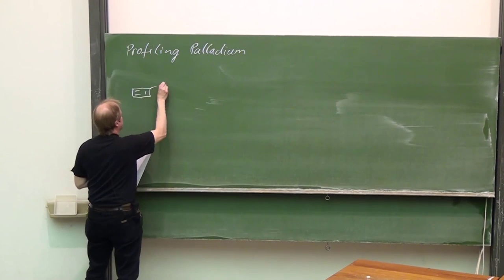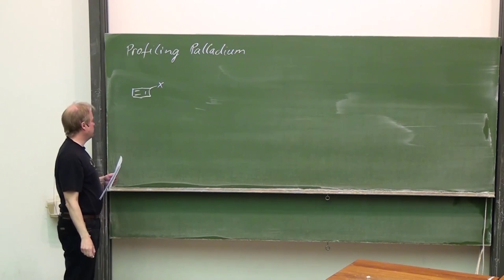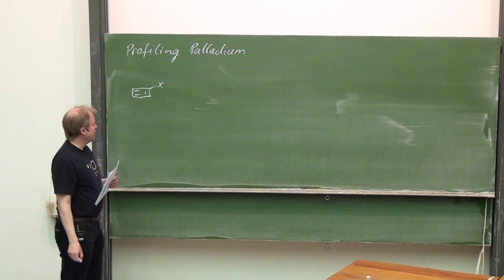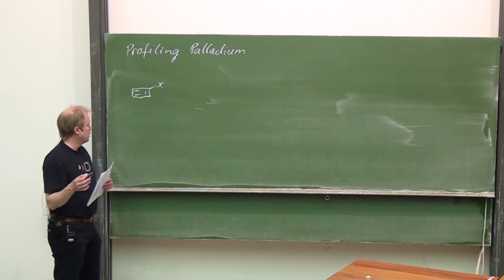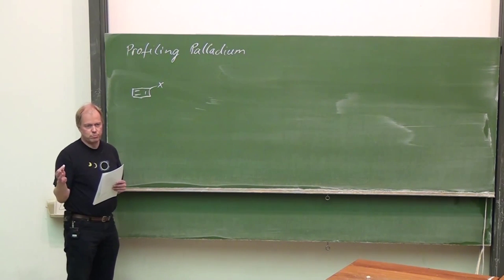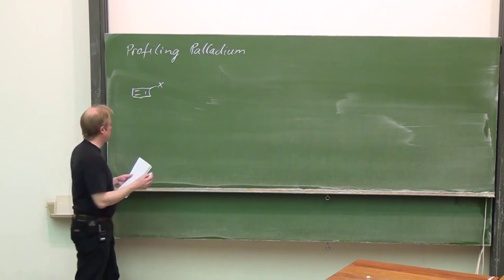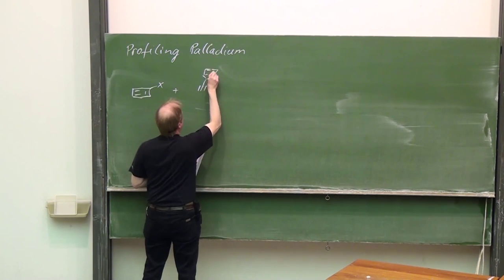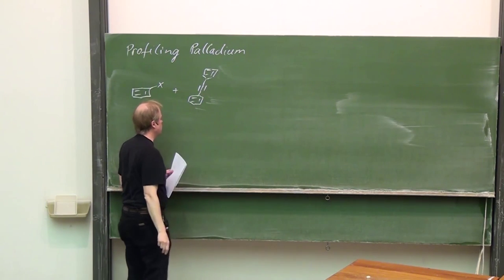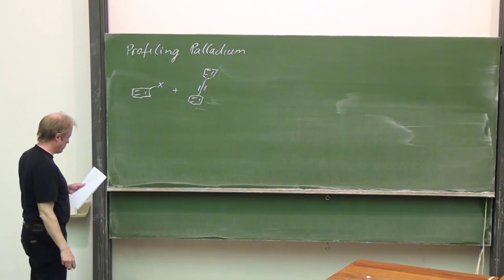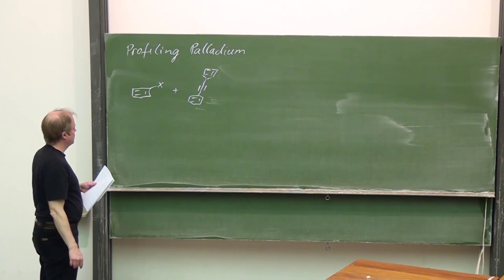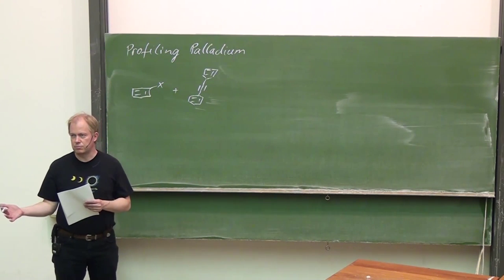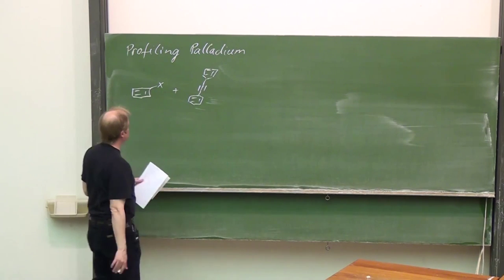In a Heck reaction, an aryl or vinyl halide reacts with an olefin. As a net result, a C-C bond is formed and HX is eliminated, bound by the base which is always present. Now, let us assume that we don't have an olefin but an alkyne, diphenyl acetylene also called tolane as the substrate. In that case, beta-hydride elimination can't occur because we don't have beta-hydrides present.